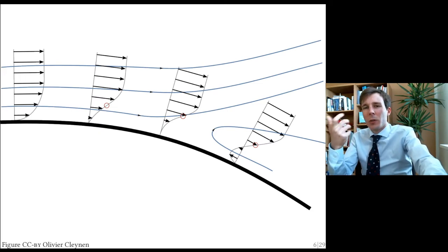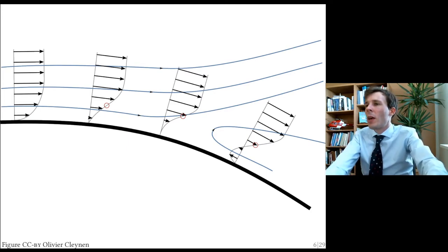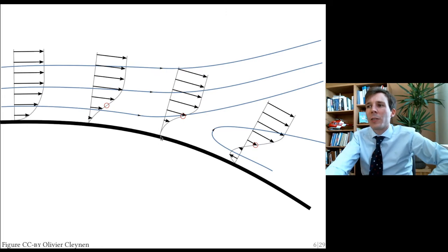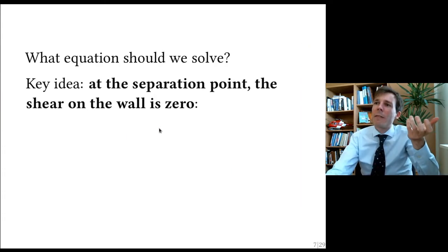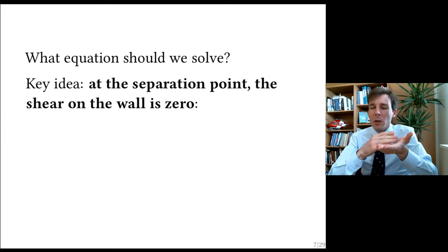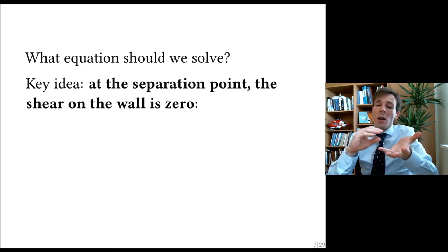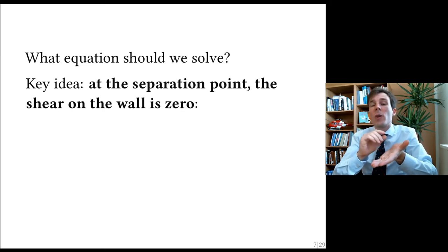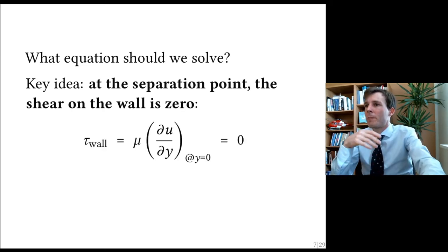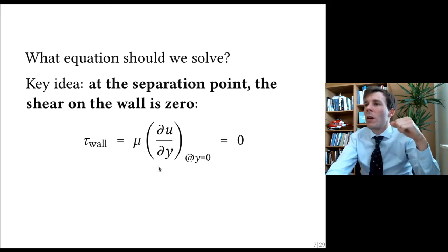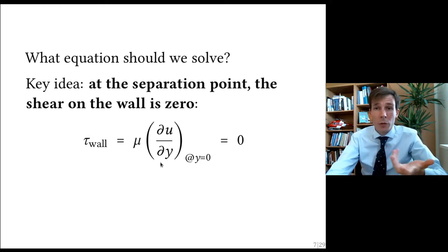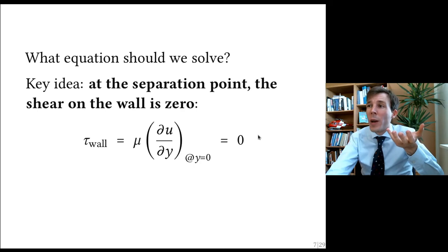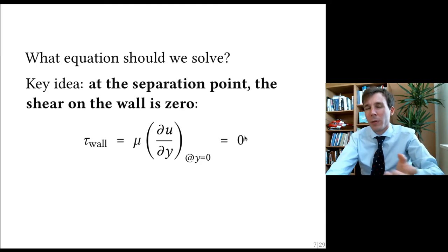So how do we predict this? How do we quantify this mathematically or with computers? The key idea is to figure out that flow separation happens when you have a completely vertical velocity profile at the wall. When this happens, you have shear on the wall which is equal to zero. So in a CFD simulation, you want the software to calculate and display the areas where the shear on the wall will be zero — where the partial derivative of streamwise velocity with respect to distance away from the wall, at the surface of the wall, equals zero.